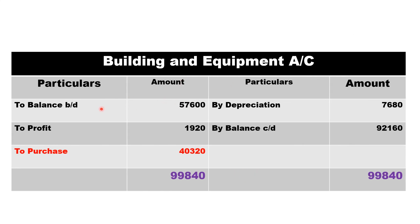Building and Equipment Account: it is an asset, to balance brought down fifty seven thousand six hundred. By depreciation found in the accumulated depreciation account: seven thousand six hundred eighty. There is a profit on sale of building given in the income statement — one thousand nine twenty for building and equipment — which comes on the debit side since in the P&L account it comes on the credit side. The differencing figure is forty thousand three twenty, treated as a purchase of building and equipment.